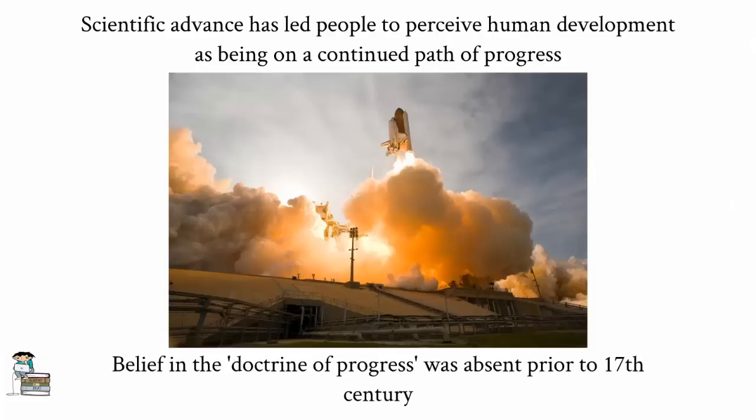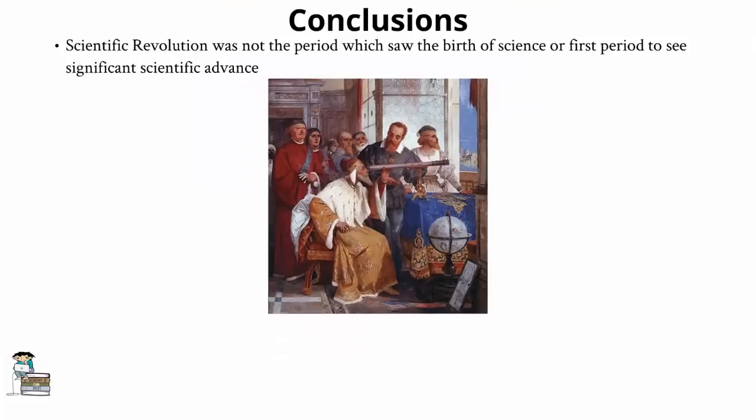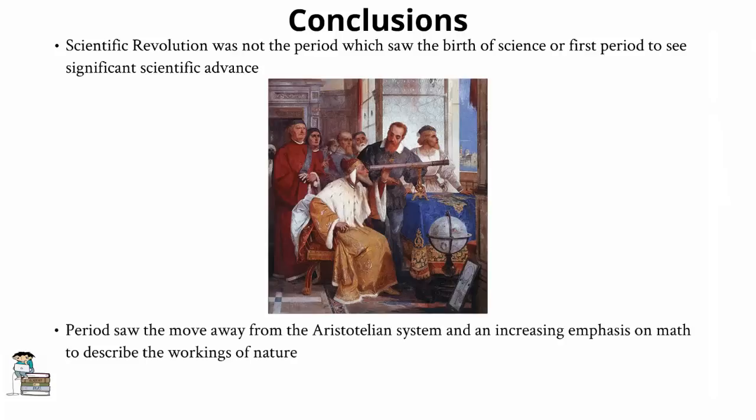So to conclude, while the scientific revolution was not the period which saw the birth of science, or the first period to experience significant scientific advance, it was a period which saw remarkable individual achievements in natural philosophy, by men who are now viewed as giants of the field. It was also the period which saw the overthrow of Aristotle's natural philosophy, and an increase in the use of mathematics to describe the natural world. These two changes have undoubtedly had a remarkable impact on the development of science up until the present day. And along with the many other changes to science which took place in the 17th century, some have come to view the scientific revolution as one of the most formative periods in the history of human civilization.